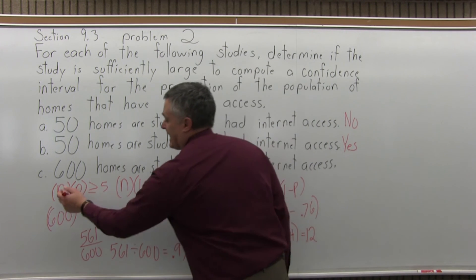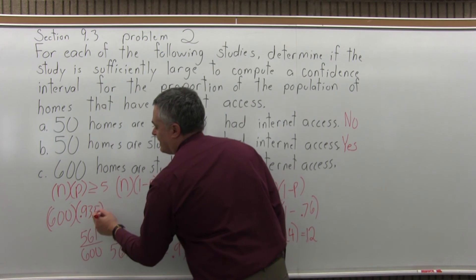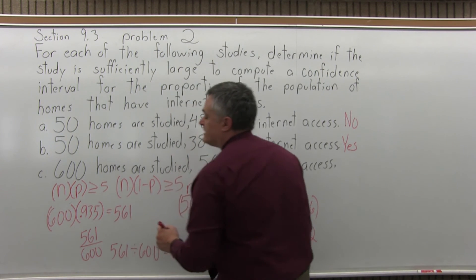So, 600 for n, n times p is .935. And if you multiply that out, that does come out to 561.